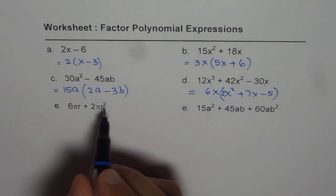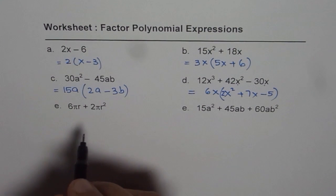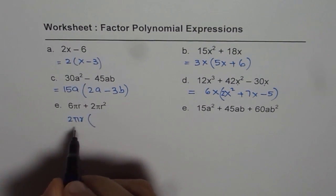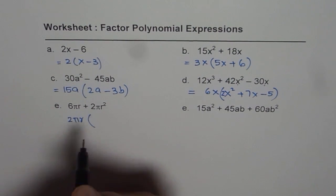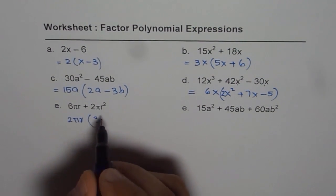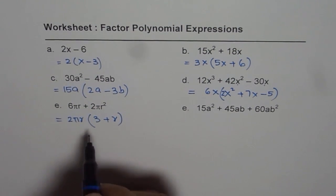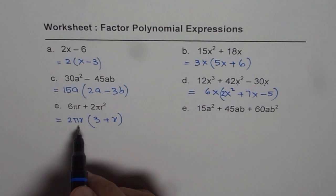6 pi r plus 2 pi r squared. The common factors are 2 pi and r. 2 pi r is a common factor. Dividing 6 pi r by 2 pi r is the number 3, and 2 pi r squared by 2 pi r leaves us with r. That is how we can write this sum in product form.